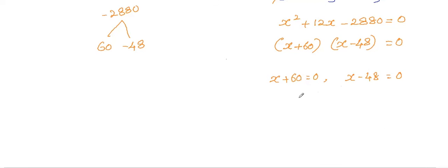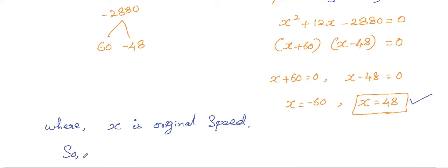Solve for X now. X is the original speed of the car, so X equals minus 60 or X equals 48. We are not supposed to take the negative value, so we can conclude that the original speed of the car is 48 kilometers per hour.